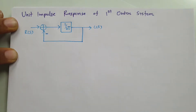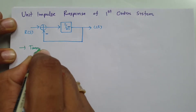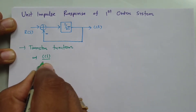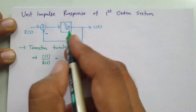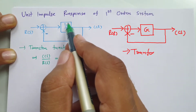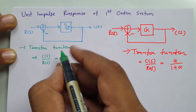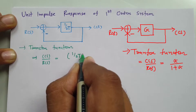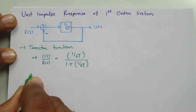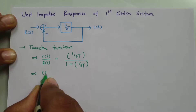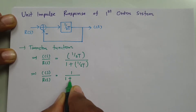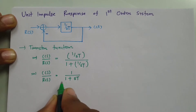First of all, I need to identify the transfer function of the system. The transfer function is the ratio of output divided by input: C(s) divided by R(s). For unity negative feedback, the transfer function is system gain divided by 1 plus system gain. So here, system gain is 1/(s·T), giving C(s)/R(s) = 1/(1 + s·T). This is the transfer function.